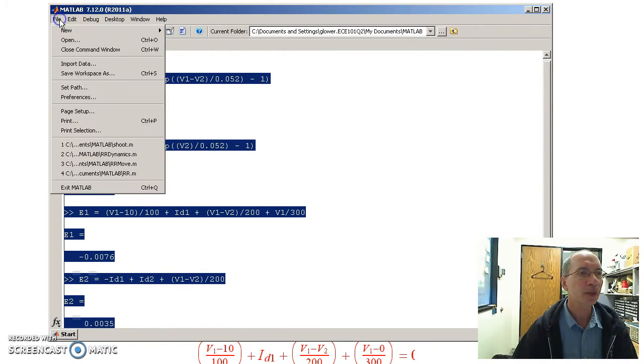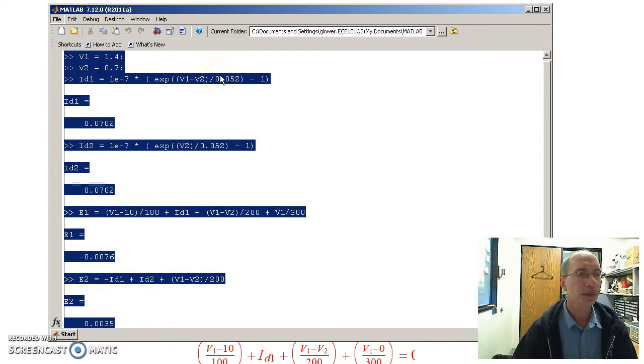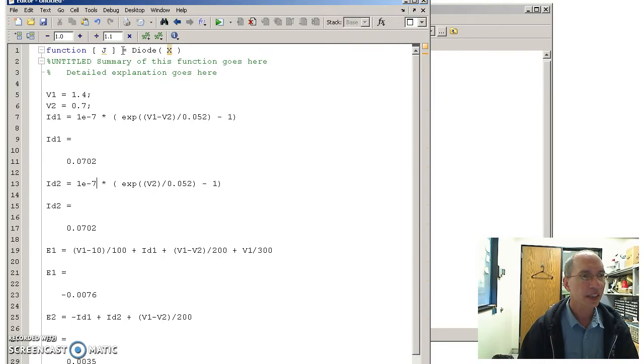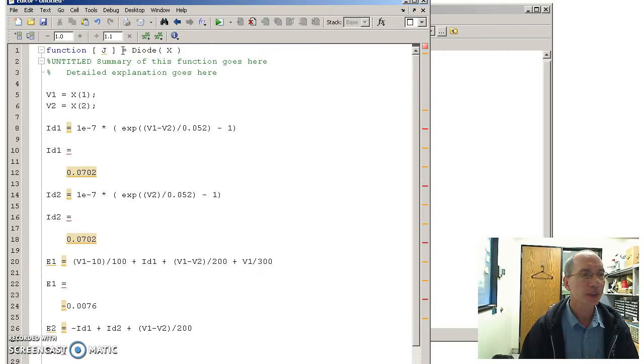So under MATLAB, I'll do File, New, Function. This is a cost function. I'm going to pass to it a guess. We'll call it Diode, and pass to it an array x. What x means is V1 is the first entry in x. x will have two guesses and two voltage nodes. I'm going to parse it so that first is V1 and second is V2.